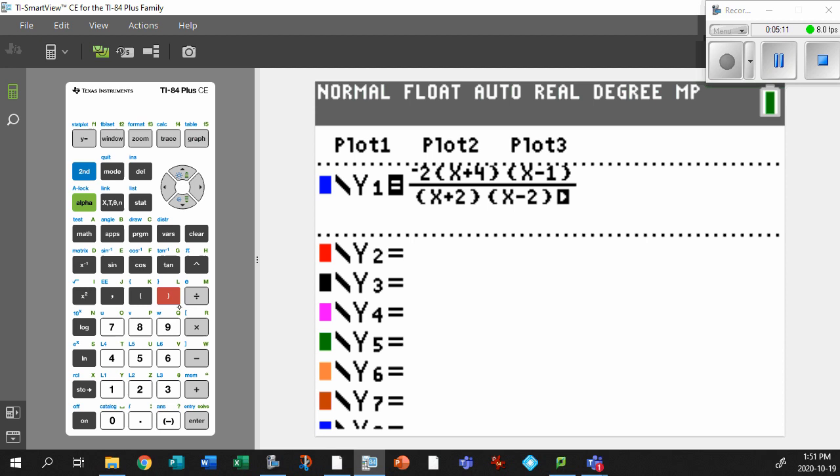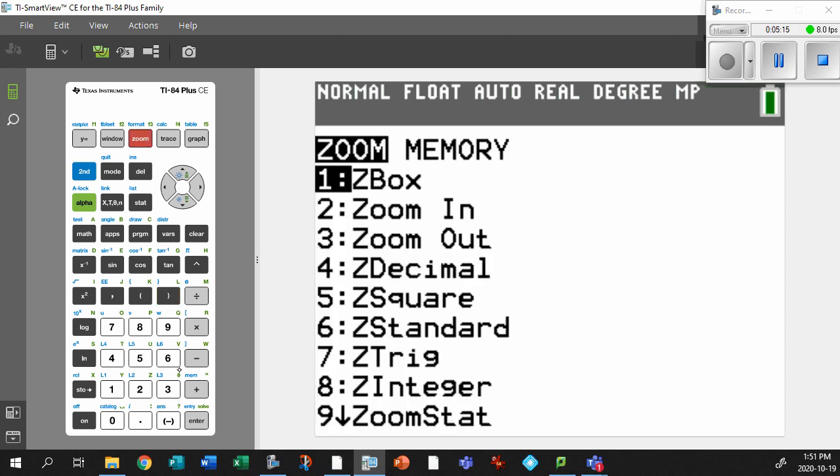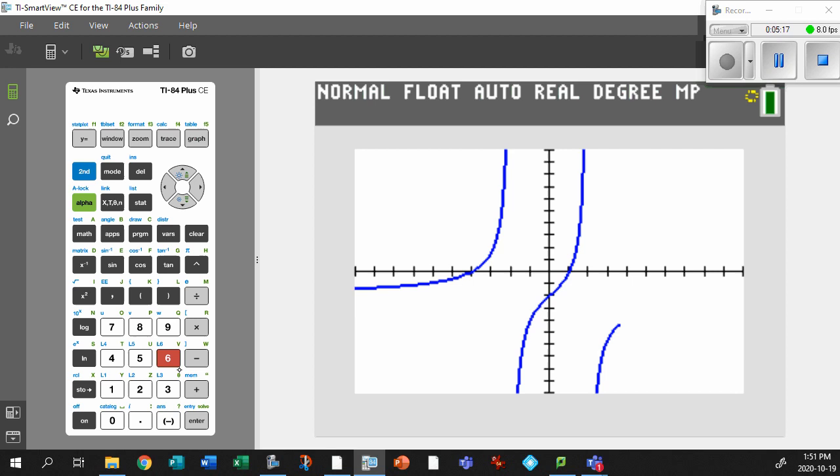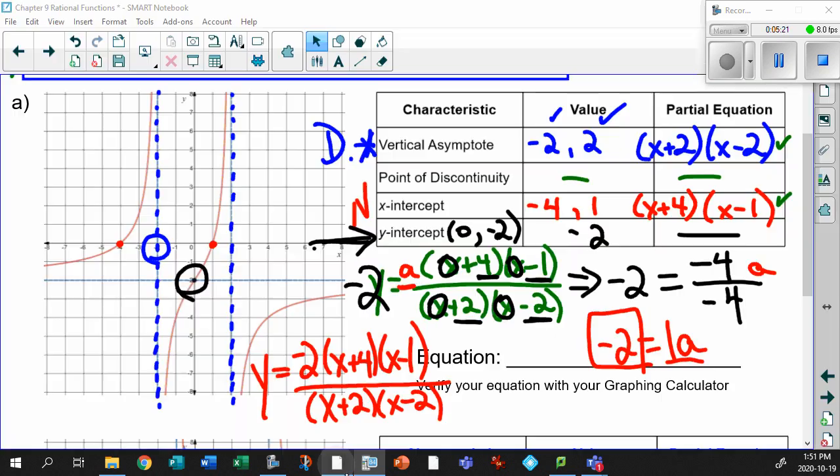And I hope we have a decent-looking graph here. And I'm just going to go zoom standard just to be sure. Exactly what we had written right there. Now, isn't that pretty? Everything works out just beautifully. Your equation looks exactly like the graph. And the nice thing about your graphing calculator is you've got an actual graphed graph that you can compare with.